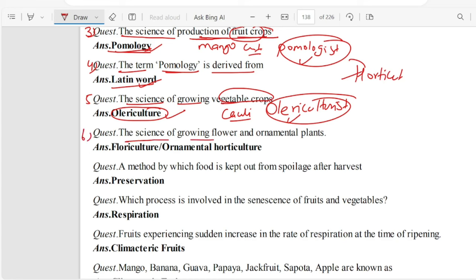The science of growing flower and ornamental plants is Floriculture. This is the science of growing flower and ornamental plants.